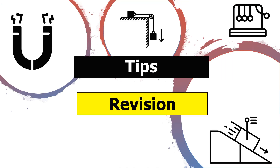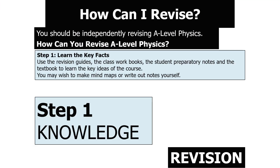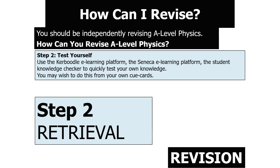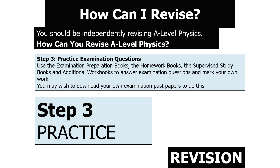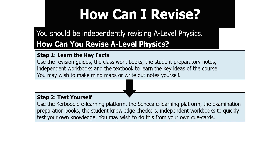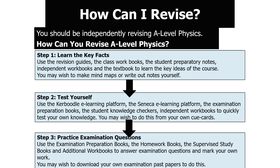In terms of revising AQA A-Level Physics, the first step is learning the key facts — use your revision guide, class workbooks, and textbooks, which might include writing mind maps or notes. The second step is retrieval: test yourself using tools like Seneca and knowledge checkers, or your own cue cards. Finally, practise examination style questions using exam practice books, homework books, and past papers. These three steps are how you should be revising.